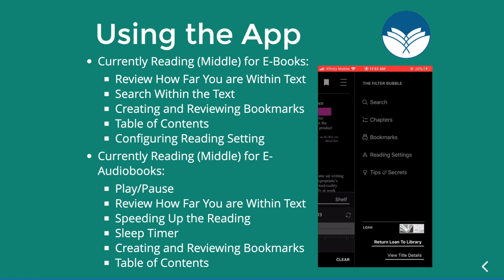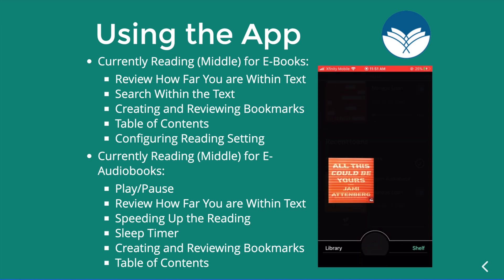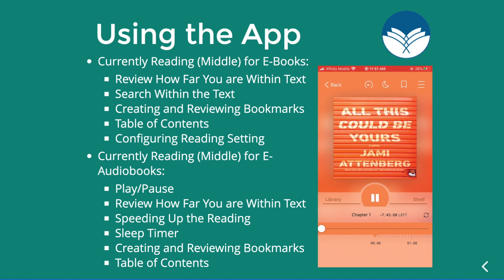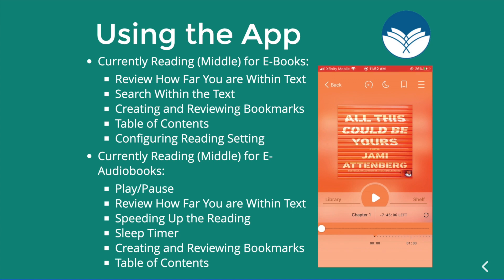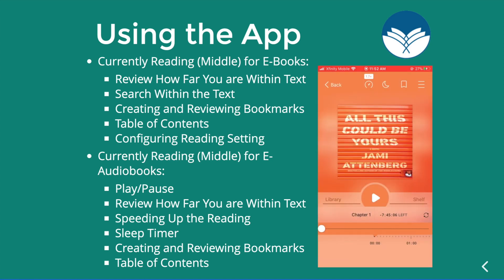That's everything for reading an ebook. For an e-audiobook — here I have All This Could Be Yours by Jamie Attenberg — you can select it and hit the play button to start, and pause to pause. You can see how far you are: I still have seven hours left, with one second elapsed, and I can see how much is left in the chapter and what percentage I'm at. You can also speed up the playback — I like to set it to 2x speed. Clicking it increases by 0.25 increments up to 2, and clicking again resets to 1. You can also click and drag to set a custom speed like 1.65.